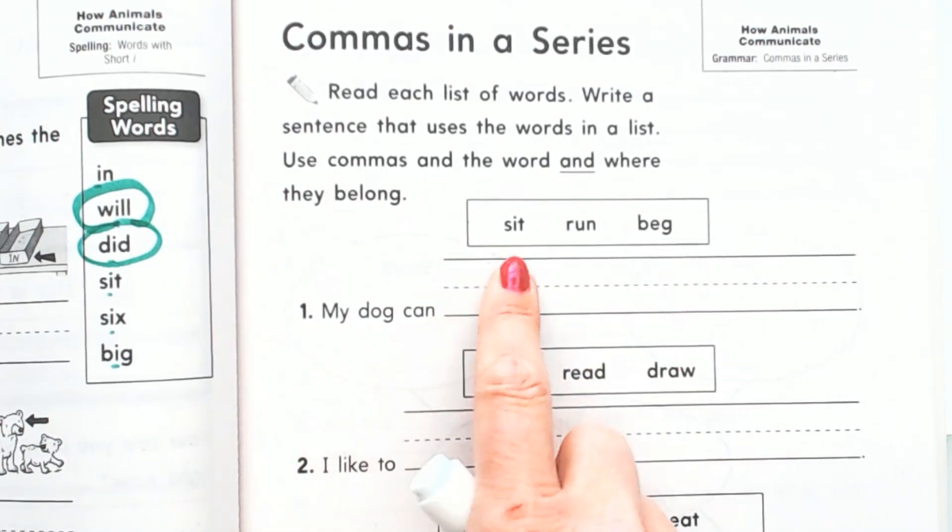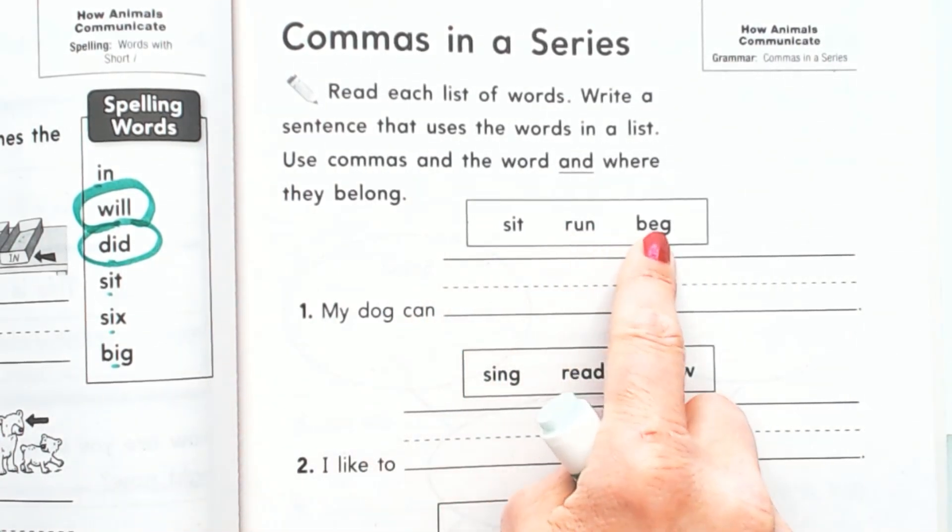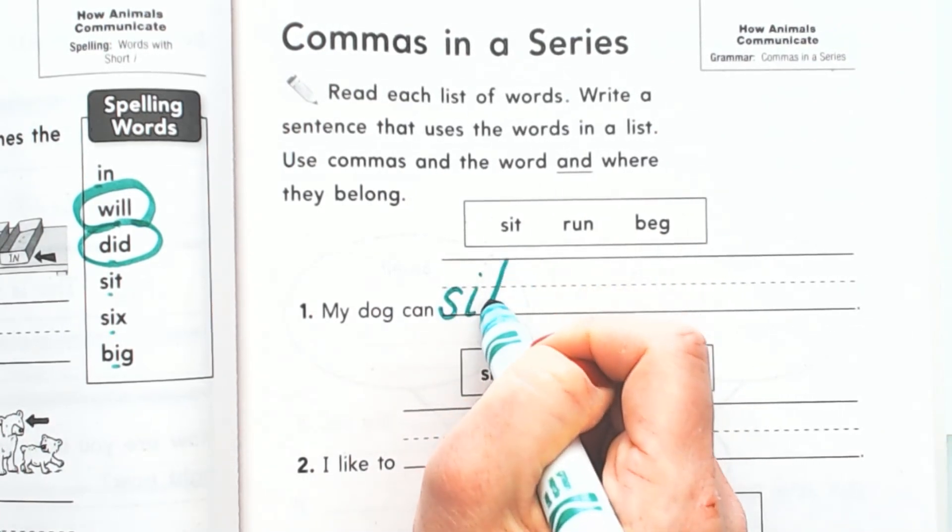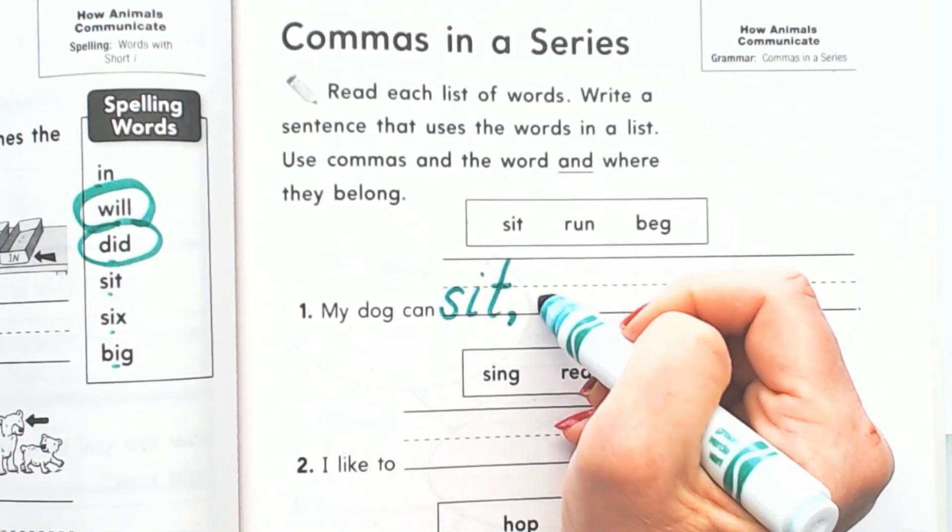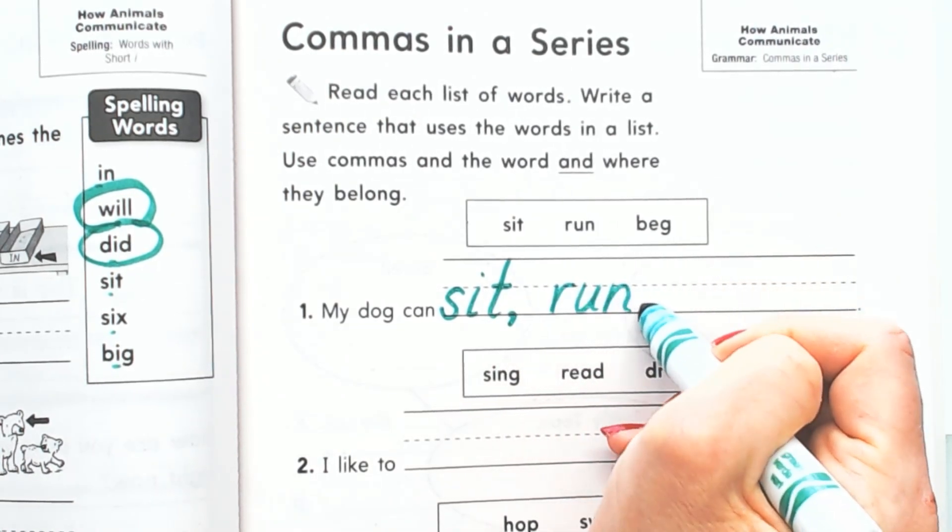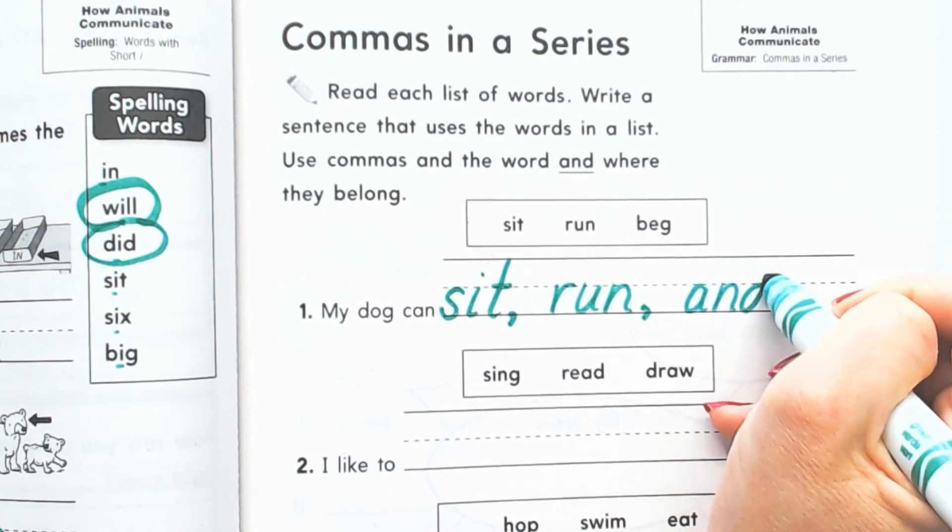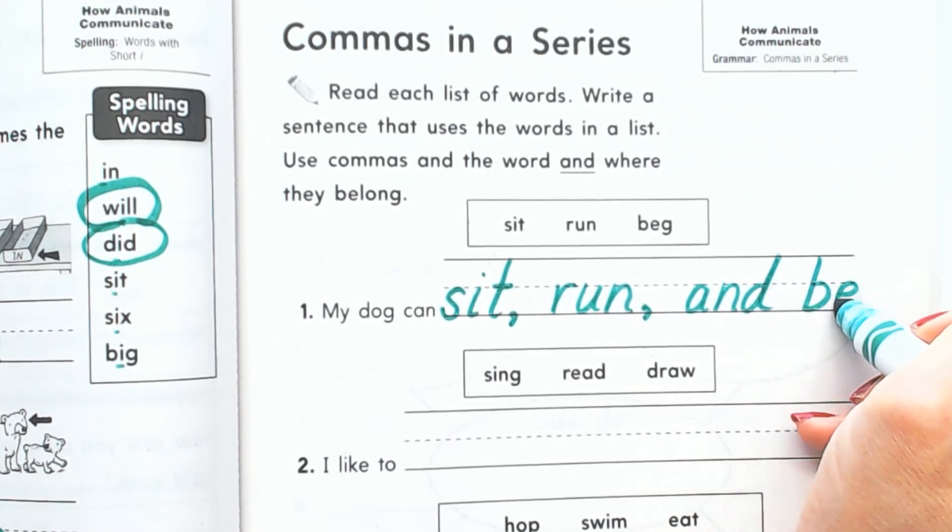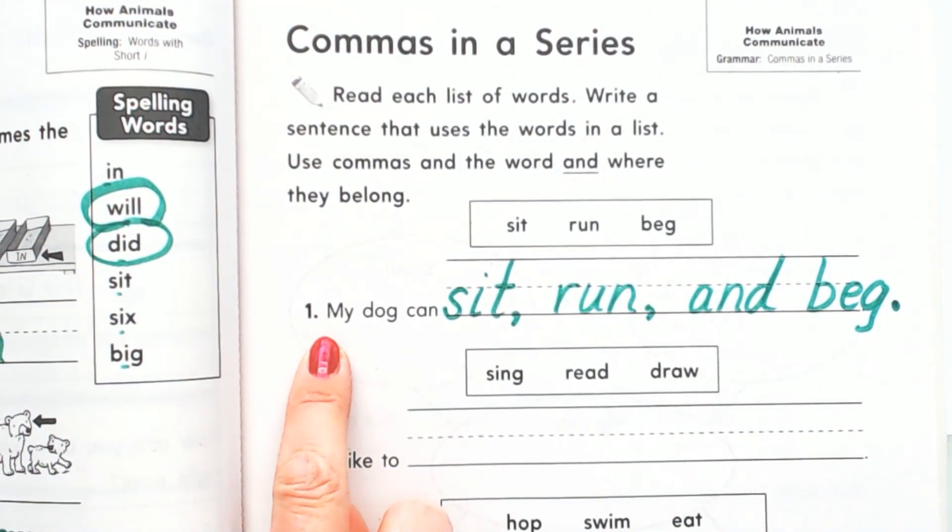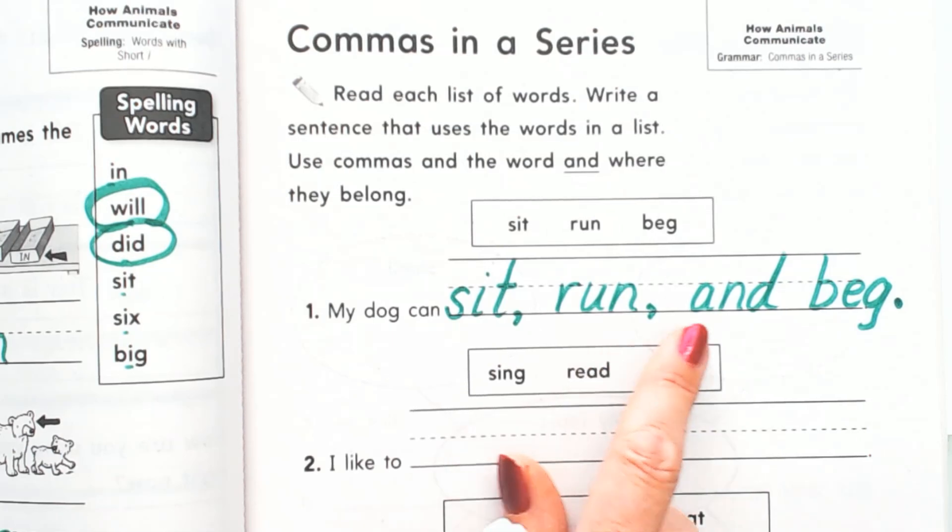So it says my dog can sit, run, beg. So we're going to write, we want that to say 'My dog can sit, run, and beg.' So write the first word here. My dog can sit, comma, and there's a little finger space, run, comma, little finger space, and beg. Looks like they didn't give us a lot of space there. So we did it. My dog can sit, comma, run, comma, and beg.